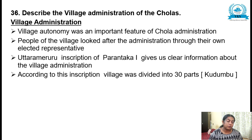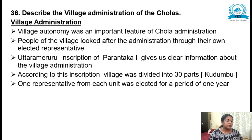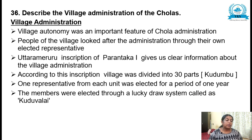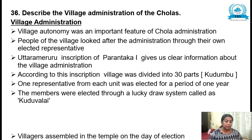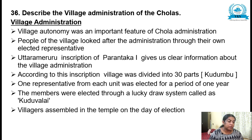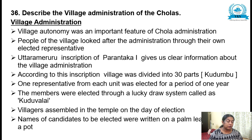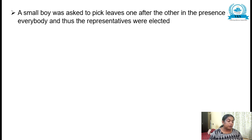According to this inscription, the village was divided into 30 parts called kudumbu. One representative from each unit was elected for a period of one year, and members were elected through a lucky draw system called kudavolai. Villagers assembled in the temple on the day of the election; names of candidates were written on a palm leaf and put in a pot, and a small boy was asked to pick leaves one after another in the presence of everybody — thus representatives were elected.